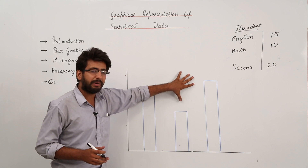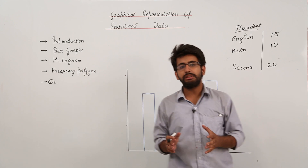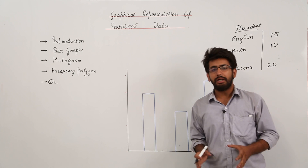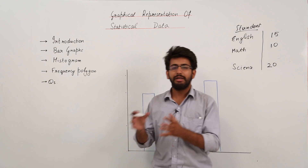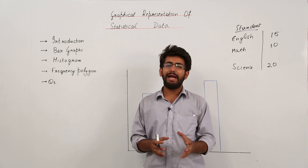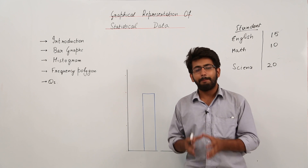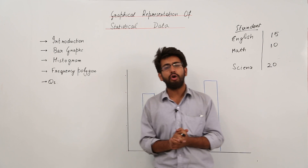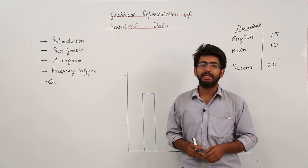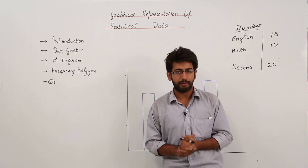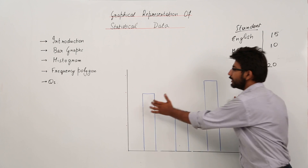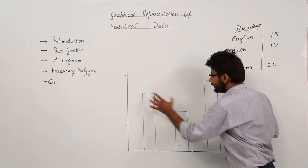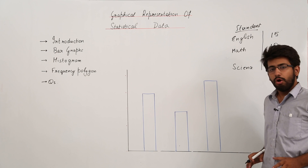Before drawing, let's discuss the definition of a bar graph. Whenever we represent data in the form of rectangles such that the width of each rectangle remains the same but the height depends upon the value of the data, that representation is known as a bar graph. The height of the rectangles changes, but their width remains fixed.